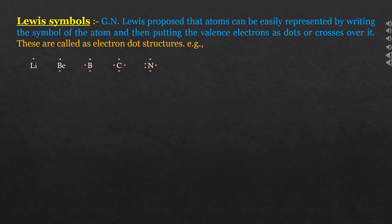Oxygen's Lewis symbol is represented by placing six dots around the oxygen symbol. In case of fluorine, the valence electrons are seven, so seven dots are placed around the fluorine atom. In case of neon, the electronic configuration is 1s2 2s2 2p6, giving eight electrons in the valence shell — so eight dots are placed around the neon atom.